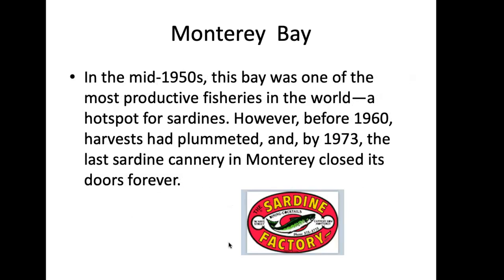Take the example of Monterey Bay. In the mid-1950s, this bay was one of the most productive fisheries in the world — so many sardines we didn't know what to do with them. Actually, we did: we canned them and canned them and canned them. At the Monterey Bay Aquarium there are historic photographs of the canning operation, and some machinery is still there, but no longer in use. Before 1960, harvests plummeted, and by 1973 the last sardine cannery in Monterey closed its doors forever. This plentiful source supposedly never going to end — did end, because we didn't study those populations and they were crashing.